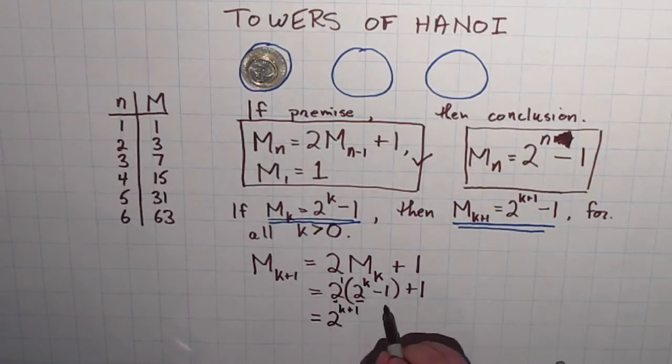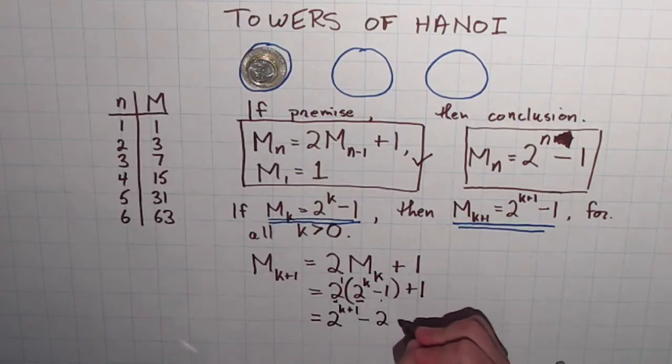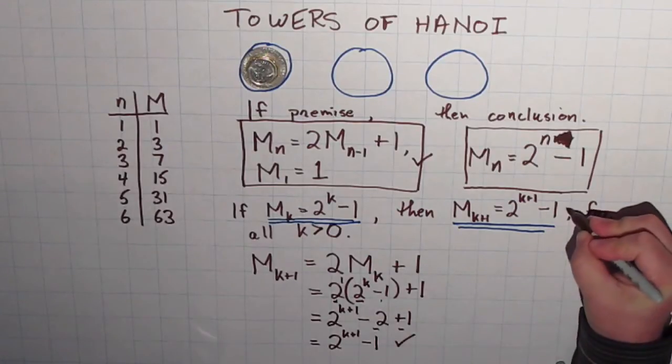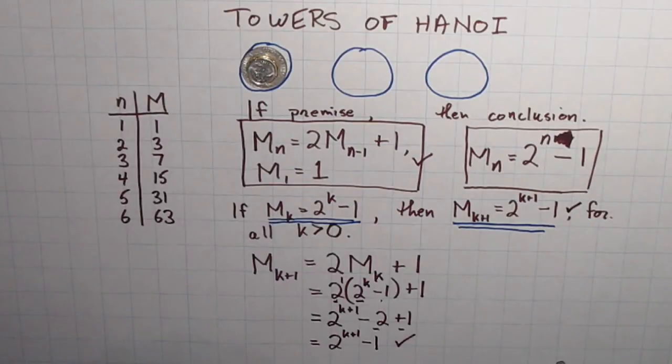And then finally, I'm going to take 2 and multiply it against negative 1. That's a little more straightforward. That's negative 2 plus a 1. And then negative 2 plus 1 right here, of course, is negative 1. So, I get 2 to the k plus 1 minus 1. And if you notice, that's exactly what I wanted, right there.